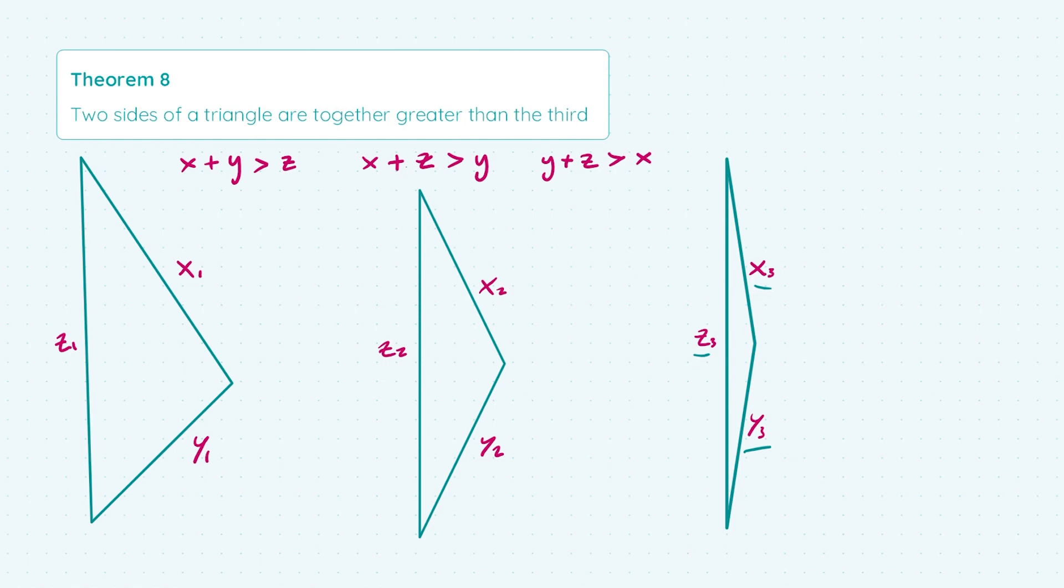So the point here being that as a triangle starts to look more and more like a line, the left hand side of the inequality starts to get closer and closer to the value of z, but it never quite reaches it.